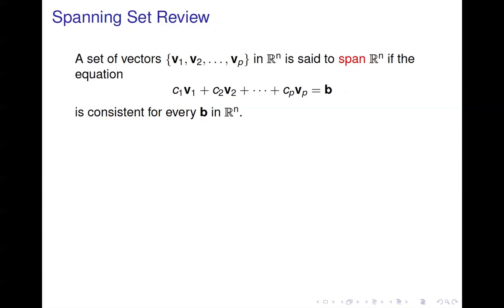Now let's move on to spanning sets. Take that same set of vectors v1 through vp in R^n. They are said to span R^n if the equation where you take a linear combination of those vectors and set it equal to b is consistent for every b in R^n — meaning you can take a linear combination of those vectors and generate any vector in R^n.